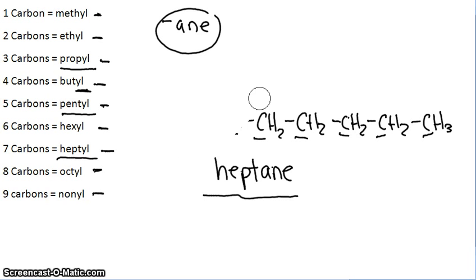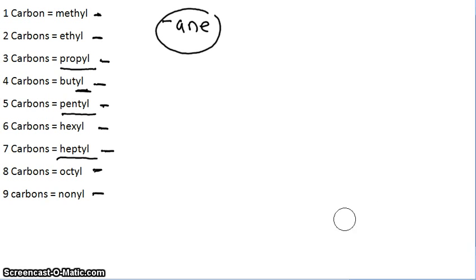Now we're going to talk about branches. So that is just one big, long branch of carbons. Now we're going to talk about branches coming off the main branch.